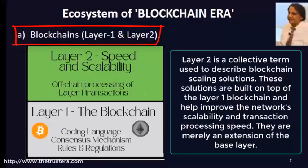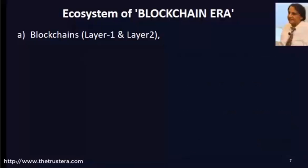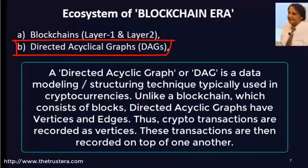One example of a layer two use case is decentralized finance, where transaction speeds are very important. There's also another technology called DAG, or Directed Acyclic Graph. DAGs are very similar to blockchains and technically do the same thing, but data is stored differently — not in sequential blocks, but in more of a tree structure.